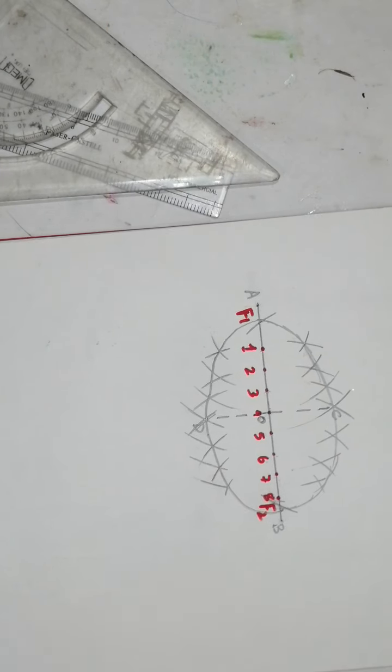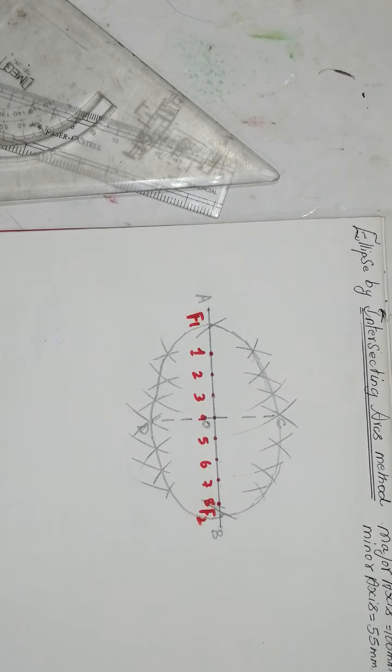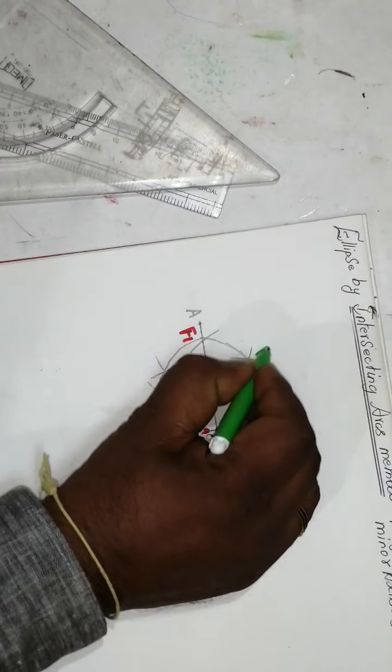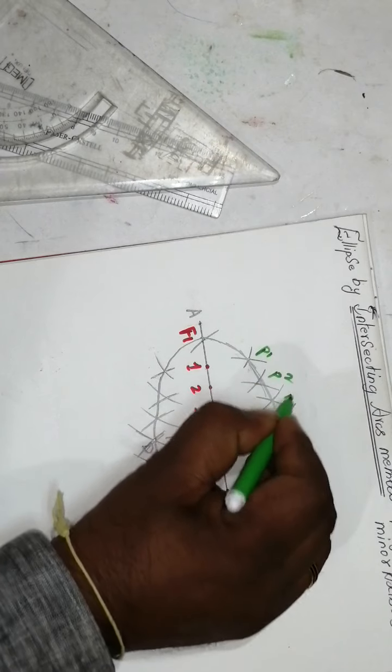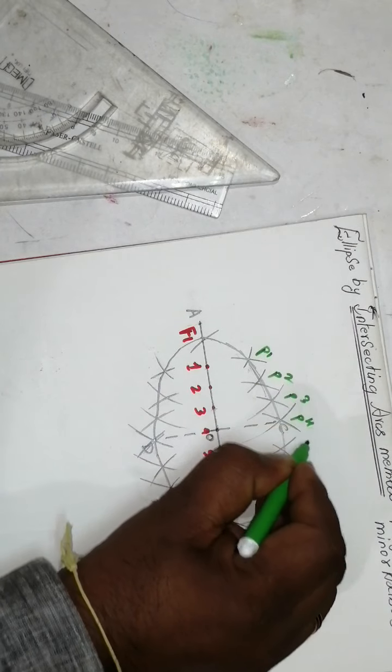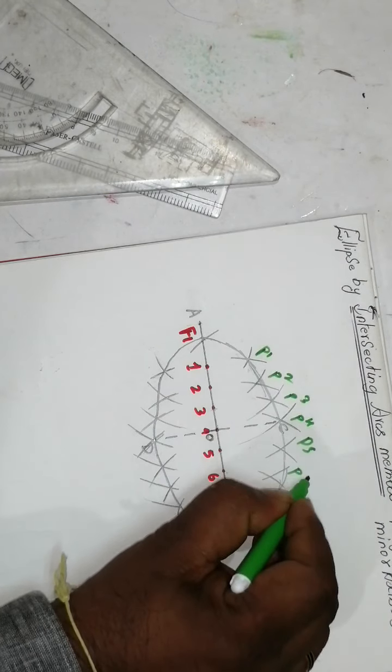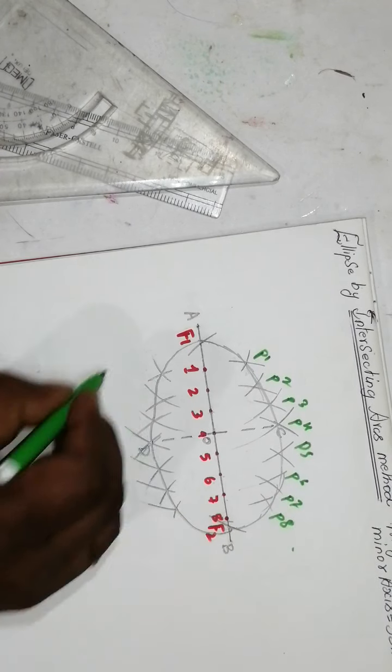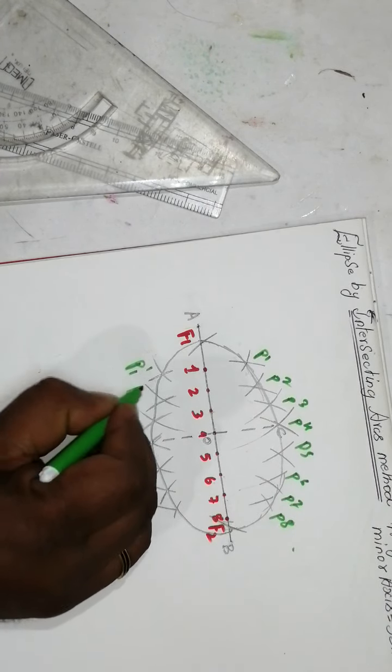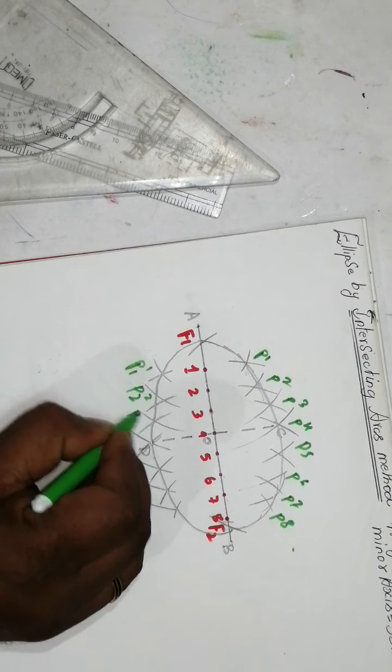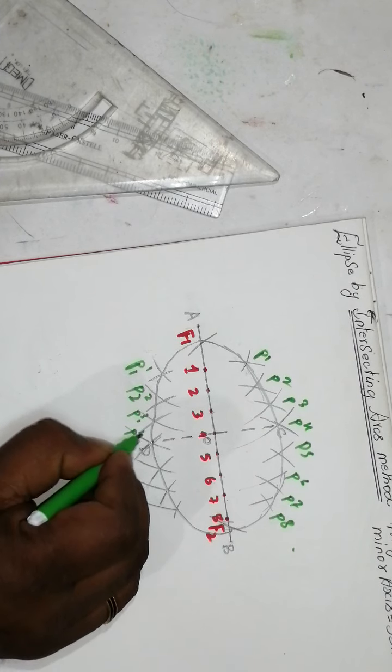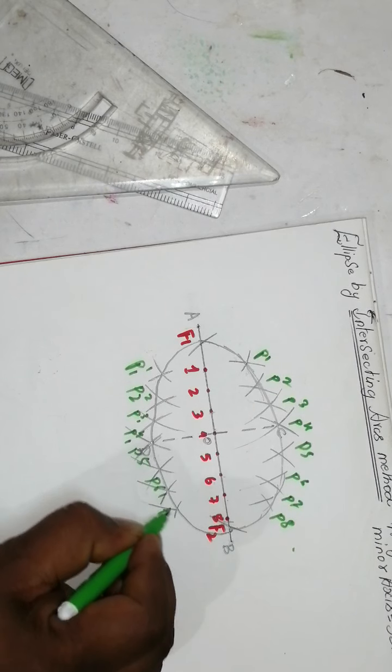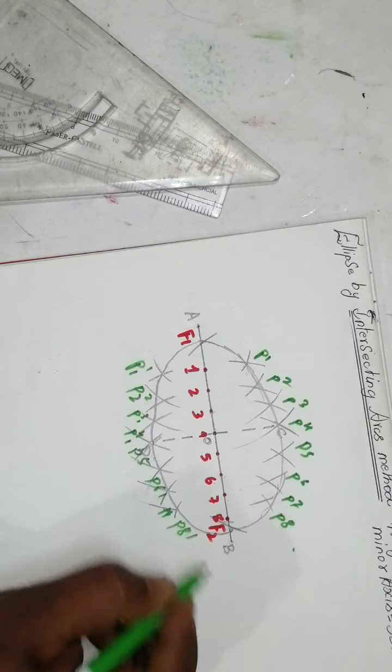The drawing will come very neatly. Mention the points like this: P1, P2, P3, P4, P5, P6, P7, P8, then P1', P2', P3', P4', P5', P6', P7', P8'. That's all, friends.